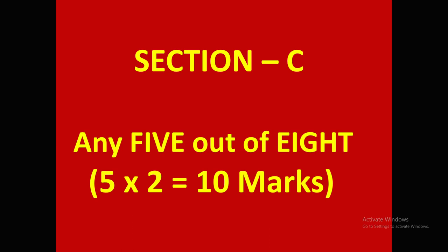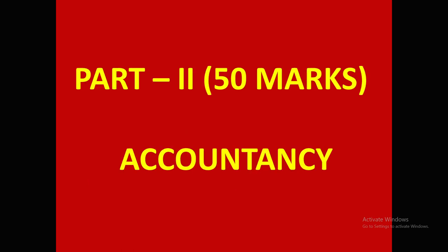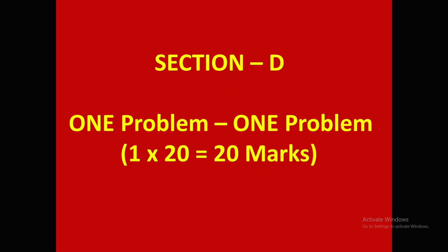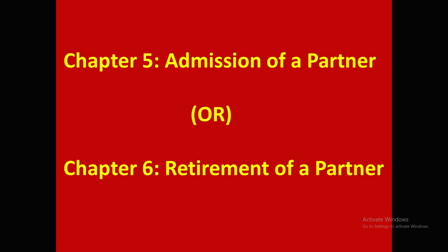Now come to Part 2 — 50 marks, Accountancy. In Section D, one problem will be given; you have to do that problem — there is no choice here. That problem is for 20 marks — 1 into 20 = 20 marks. This problem comes from either Chapter 5, Admission of a Partner, or Chapter 6, Retirement of a Partner.